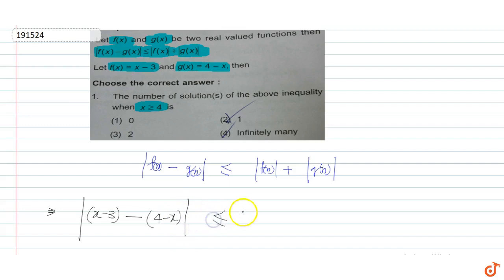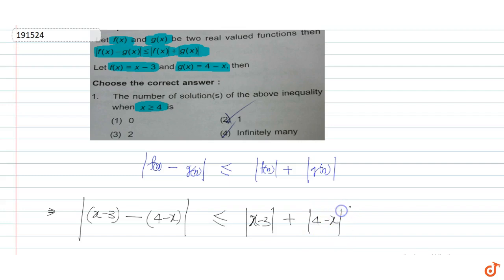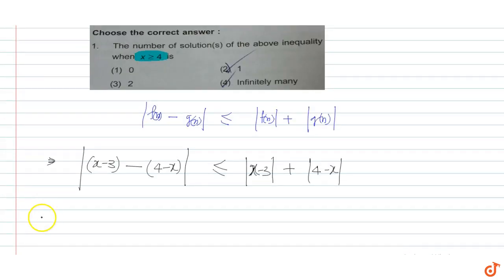This is less than or equal to |f(x)| + |g(x)|, which is |x - 3| + |4 - x|. Simplifying the left side: x - 3 - (4 - x) = 2x - 7. So we have |2x - 7| on the left side.